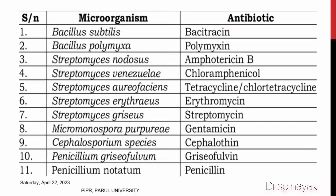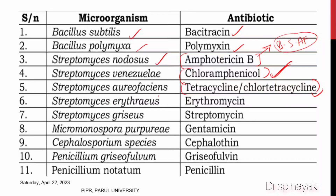Different antibiotics are obtained from different microorganisms. Bacitracin is obtained from Bacillus subtilis; polymyxin from Bacillus polymyxa. Amphotericin B, a broad-spectrum antifungal antibiotic, is obtained from Streptomyces nodosus. Chloramphenicol, another broad-spectrum antibiotic, is obtained from Streptomyces venezuelae. Despite its broad-spectrum activity, chloramphenicol is not commonly used in hospitals due to lethal adverse effects like gray baby syndrome. Tetracycline, also broad-spectrum, is obtained from Streptomyces aureofaciens.